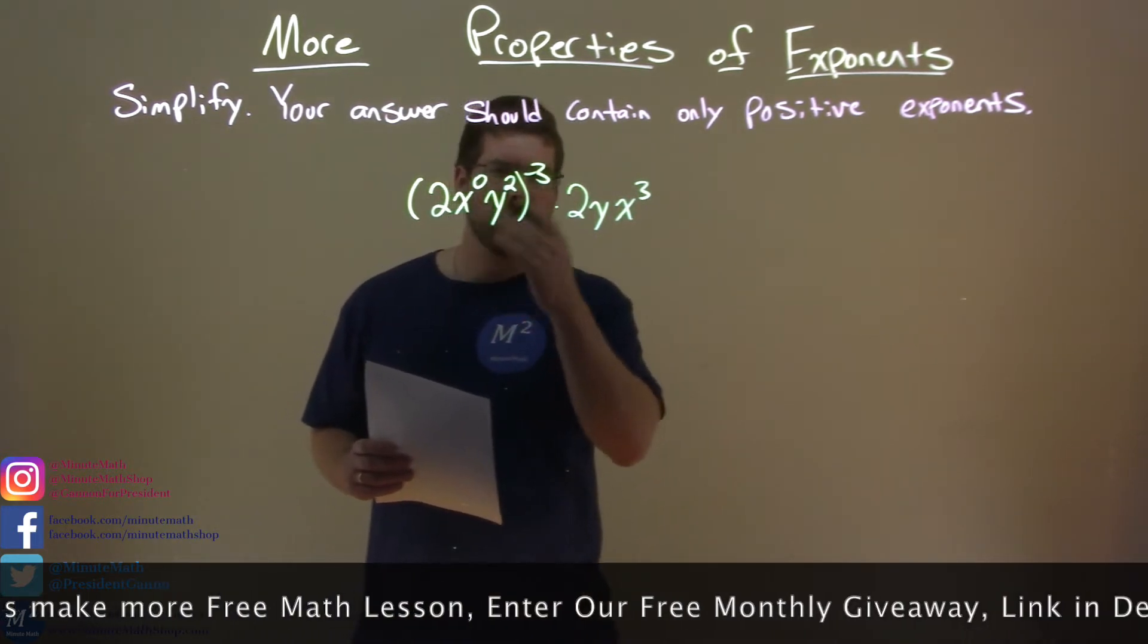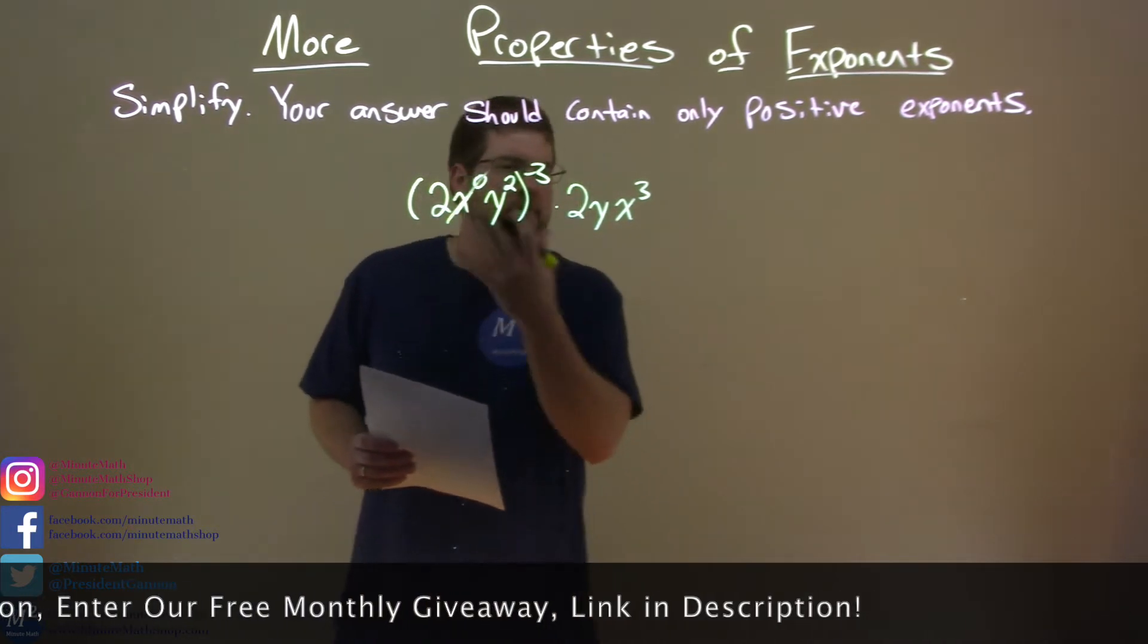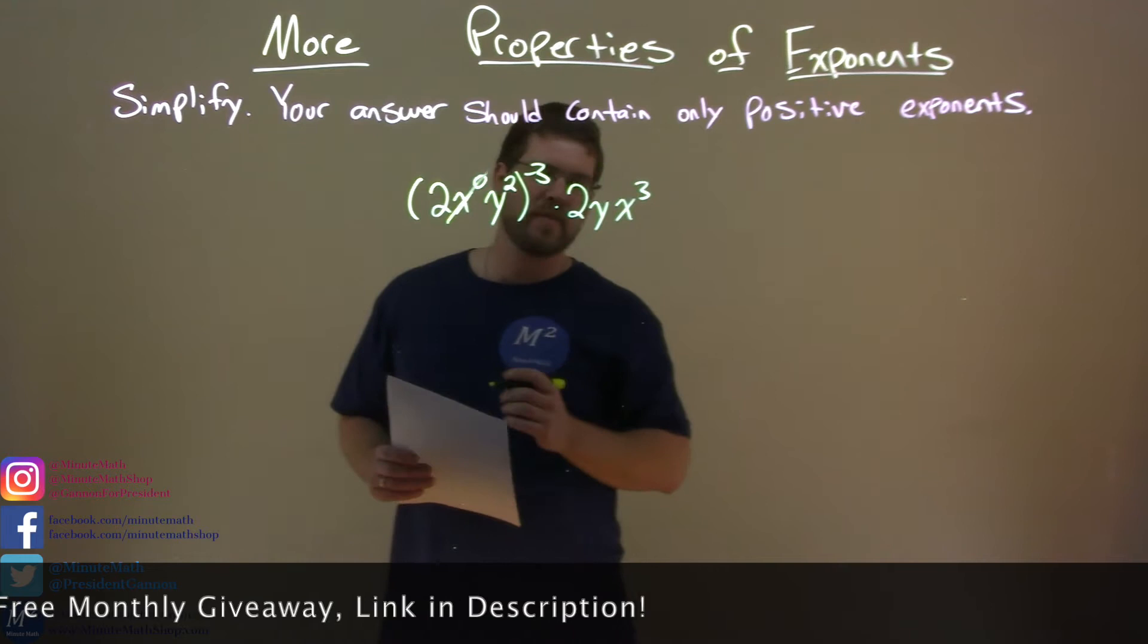Well, x to the zero power is just 1, so we don't really need that. I'll cross it off, this is multiplied by 1. That kind of makes things a little easier here.